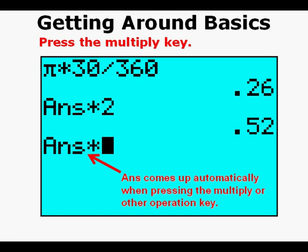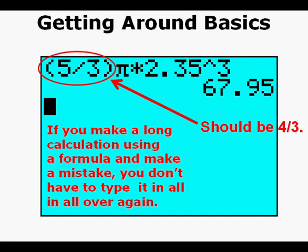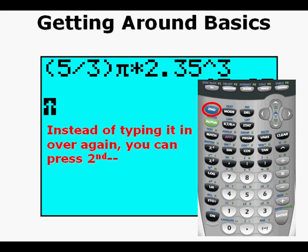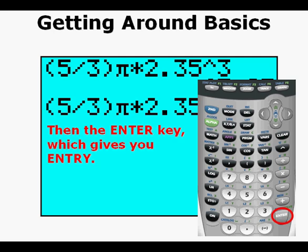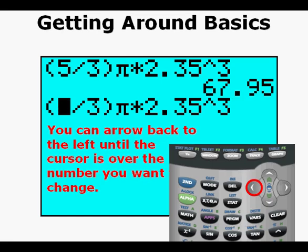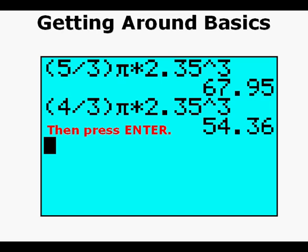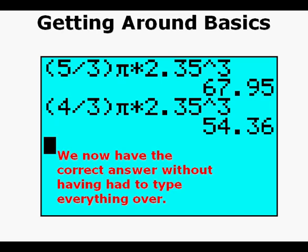The calculator has another great feature. If you enter a long expression like this one for the volume of a sphere, you don't have to type it in all over again if you make a mistake. As soon as I pressed enter and got 67.95, I noticed that I entered 5 over 3, but the formula for volume of a sphere is 4 over 3 pi r cubed. Do we have to re-enter the whole formula? No, we don't. Instead of typing it in all over again, first press the second key, then the enter key that accesses the entry option just above the enter key. We are taken back to where we were before pressing enter to calculate 67.95. We can arrow over to the left until the cursor is over the 5 that we want to change to 4 to get 4 thirds. Then we press 4 to change it to 4 without having to re-type the whole formula. Press enter. We now have the correct answer, 54.36, without having had to re-type everything all over again.